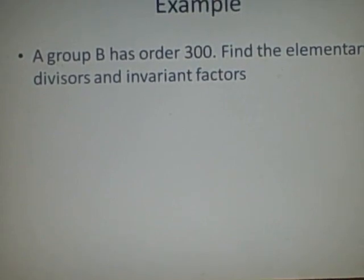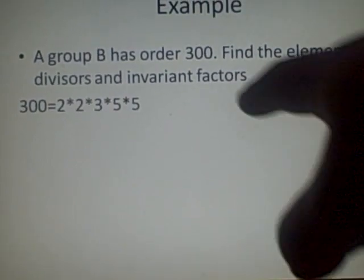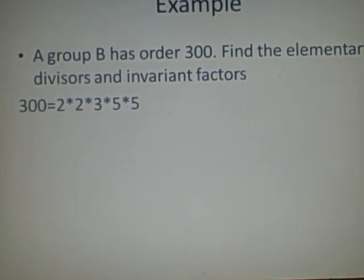Group B has order 300. This is the last example. Find the elementary divisors and invariant factors. So first we need 300 as products of primes. So we'll have 2, which would give us 150, times 2, times 3, times 5, times 5. And that should give you 300.